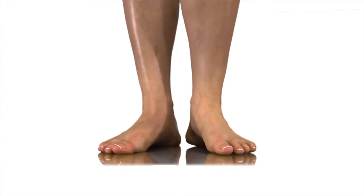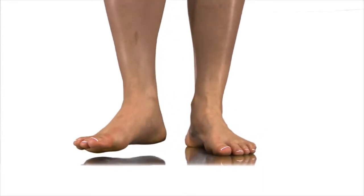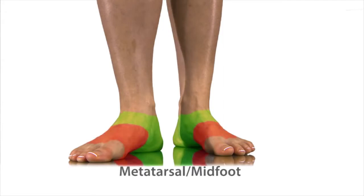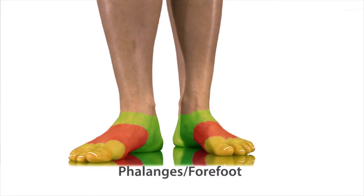There are three separate bone structures in the foot. The highlighted section is the tarsal or hind foot. The next section is the midfoot or metatarsals. And finally, the forefoot or phalanges.